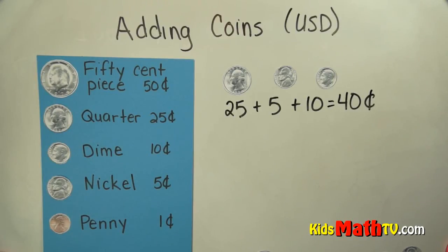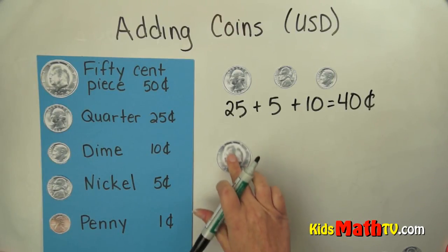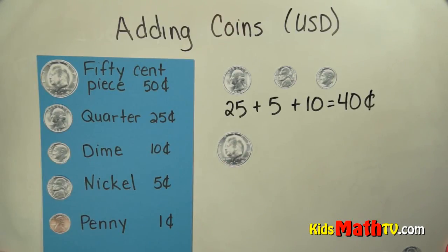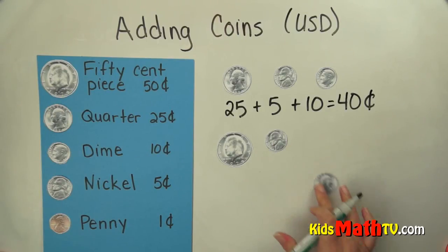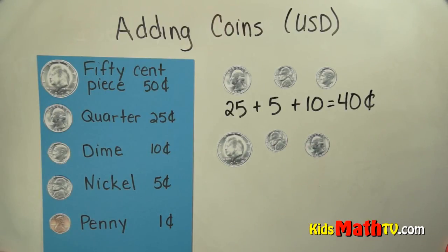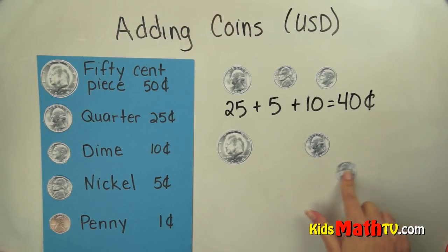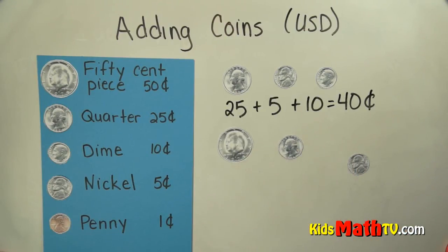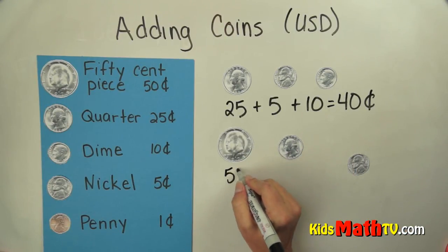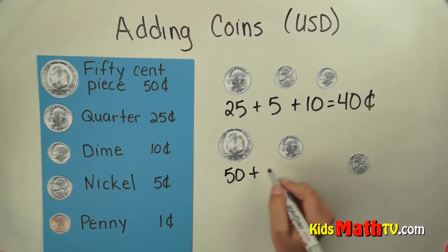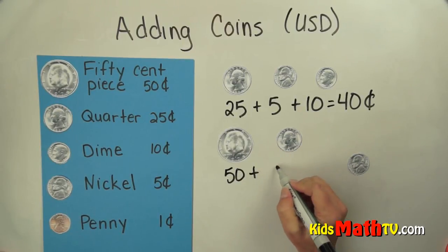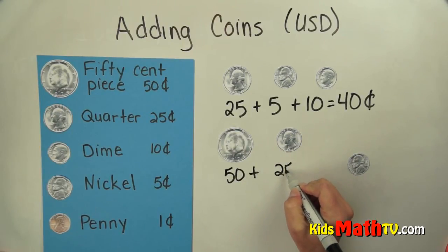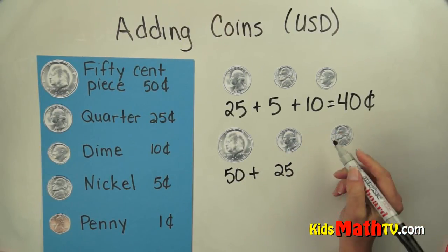Let's try a different one. Let's have a 50 cent piece, a nickel, and a quarter. So if we have 50 cents, I'm going to add the quarter next. So 50 cents plus 25 cents is 75 cents.